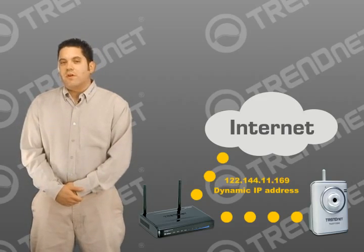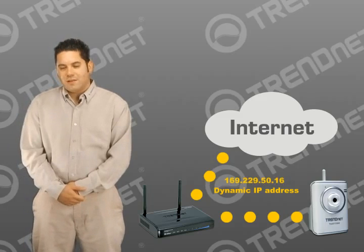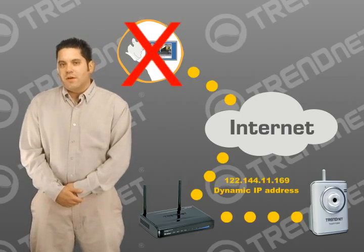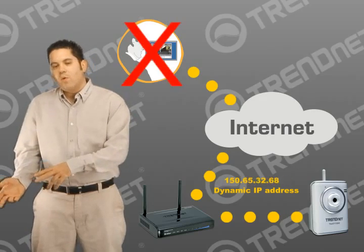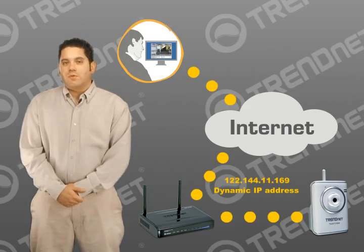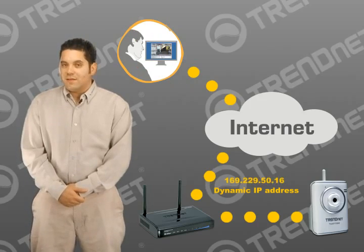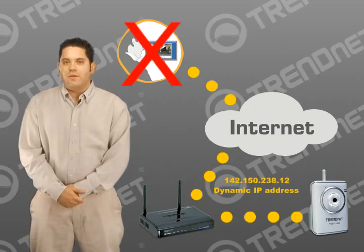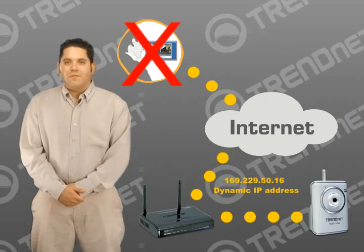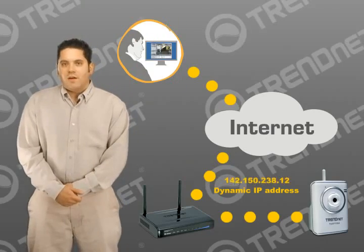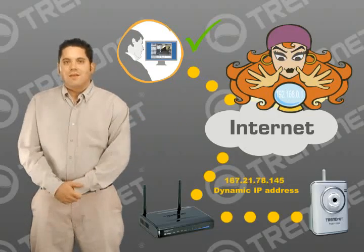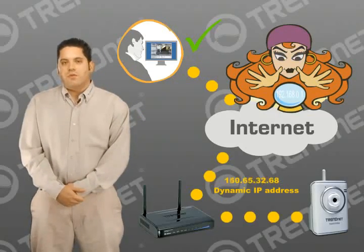Almost all Internet service providers constantly change your IP address, which makes connecting to your Internet camera impossible since you don't know your IP address from one day to the next or one hour to the next. To get around this, you will need to sign up for a service that provides a constant link to ever-changing dynamic IP addresses. There are a bunch of great free services out there, so you don't have to worry about monthly fees. I will show you a service like a fortune teller, since it will always know your ever-changing IP address in real time.